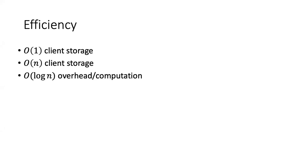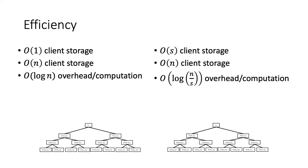The efficiency of this scheme is O(1) client storage, O(n) server storage, and O(log n) overhead for reads and writes. We can further extend this to O(S) client storage with O(n) server storage and O(log n / S) overhead by creating S different trees, each storing n/S of the data items.